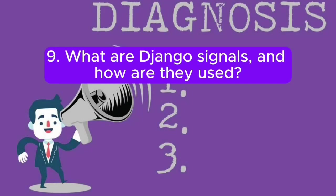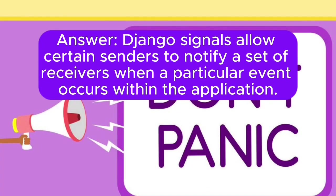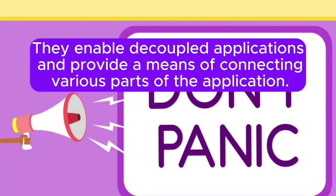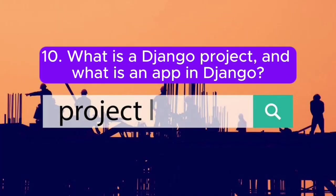Question 9: What are Django signals, and how are they used? Answer: Django signals allow certain senders to notify a set of receivers when a particular event occurs within the application. They enable decoupled applications and provide a means of connecting various parts of the application.